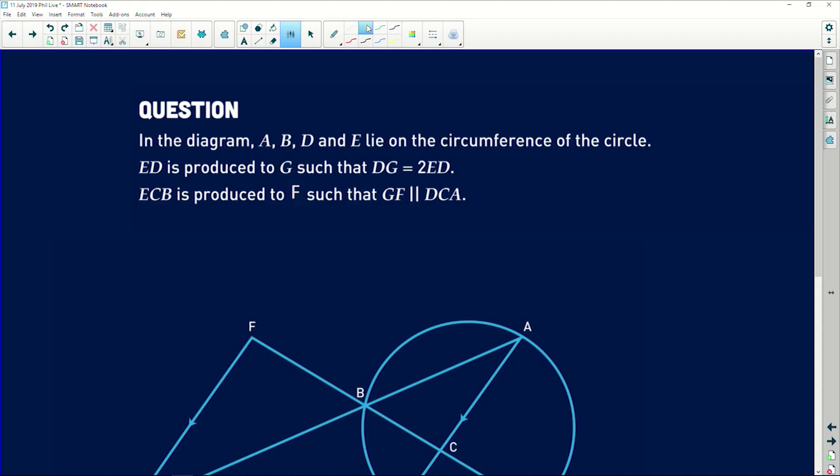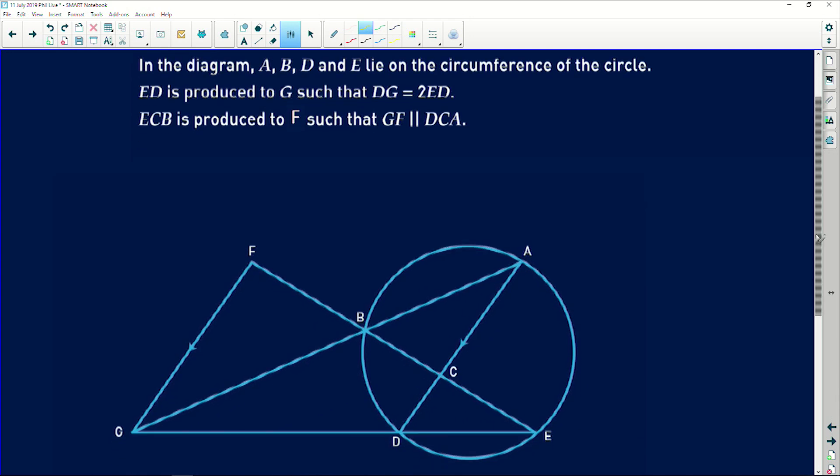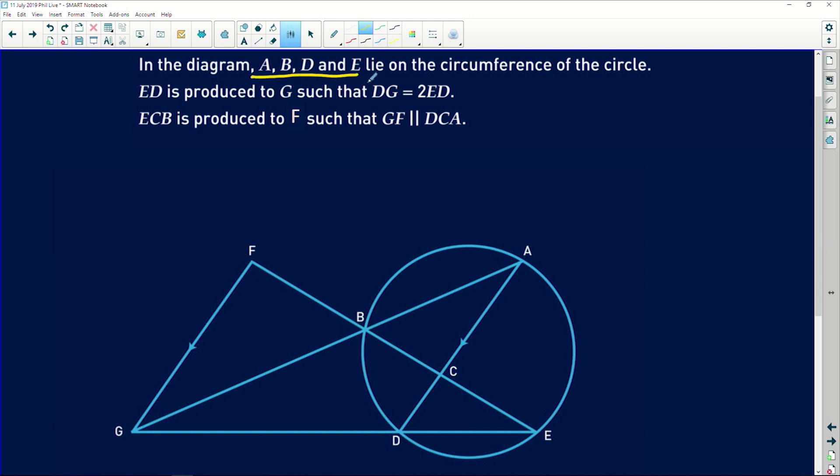Okay, I love this kind of question because it combines your similarity and proportion with your Euclidean. It's got a whole bunch of circle stuff in it. So let's take a look. It says in the diagram, A, B, D, and E lie on the circumference of the circle. Okay, we have four points on the circumference, which means cyclic quad. Immediately, cyclic quadrilateral should spring forth a lot of stuff for you guys.